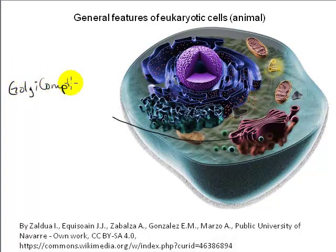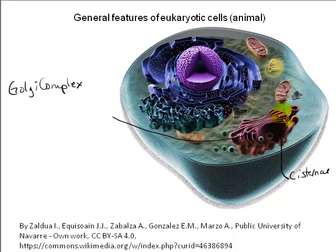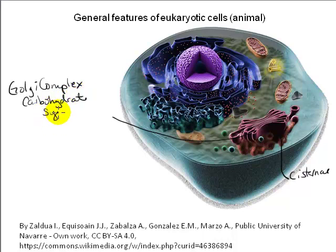The Golgi complex, or Golgi apparatus, consists of a set of flattened membrane-enclosed compartments called cisternae. The Golgi contains enzymes that catalyze carbohydrate synthesis and carbohydrate modification of proteins and lipids — which we learned earlier is called glycosylation.